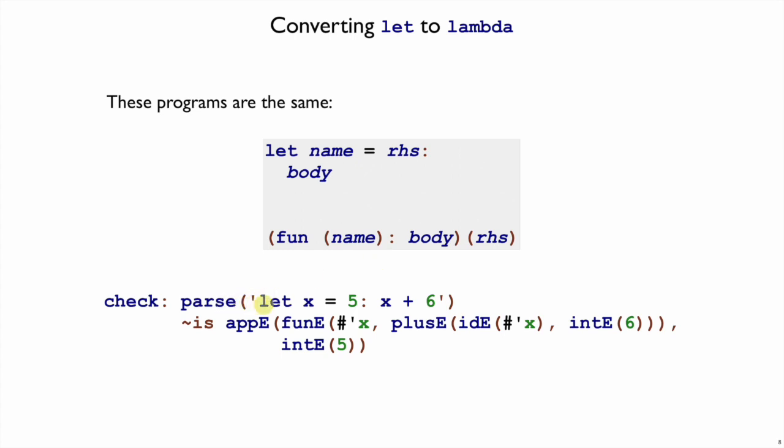That is, we could change parsers so that when it sees let x equals 5, x plus 6, it generates a function call where the 5 for the right-hand side is the argument, and the body of that function, x plus 6, goes inside a fun e, a lambda-style function, with the argument name that we've found.